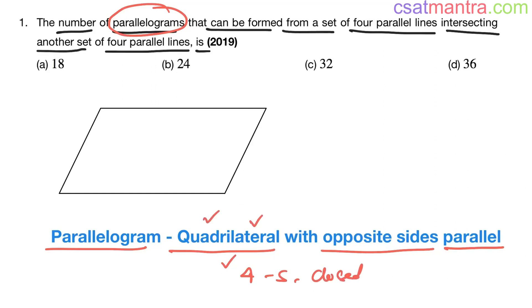A quadrilateral is a four-sided closed shape. It has four sides and all sides form a closed figure.